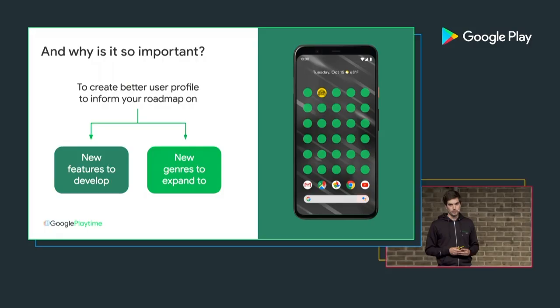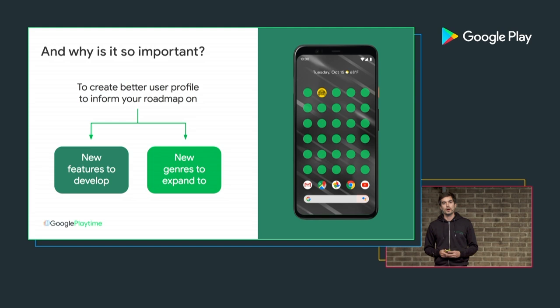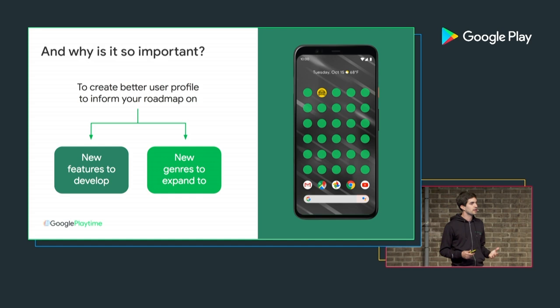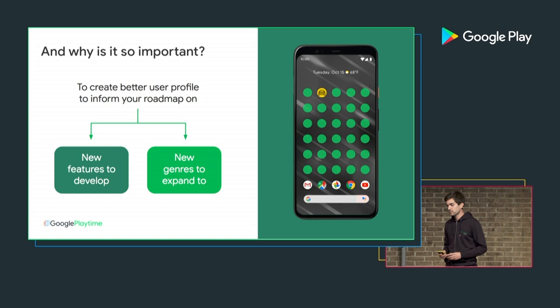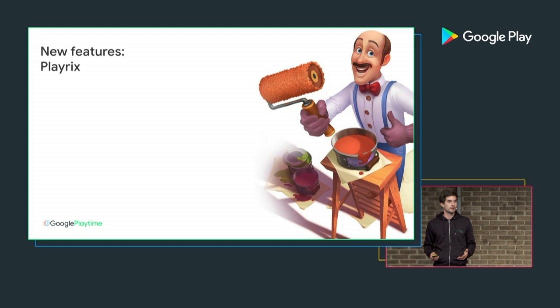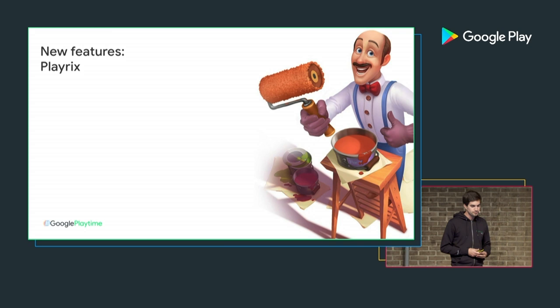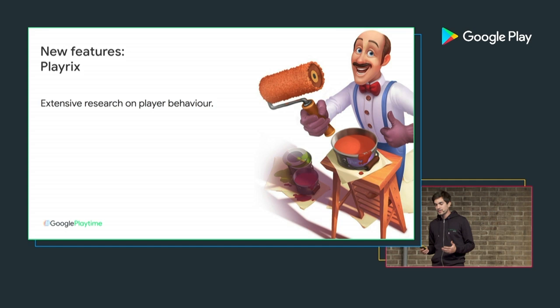Today we have a lot of interesting insights to share, but I wanted to start by talking about two companies that did an amazing job at better understanding their players with research and affinity insights. The first one is Playrix — one of the most successful developers in the world, very active in the match-three category. What they did was invest a lot in extensive research to better understand their player behavior, starting from Gardenscapes, one of their biggest games.